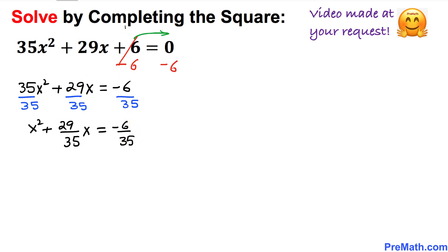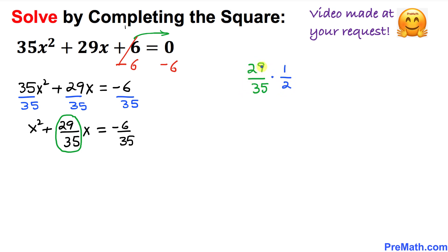Now focus on the coefficient of x, which is the fraction 29/35. Write it down: 29/35. We want to take half of this fraction, so we multiply by 1/2. That gives us 29/70.